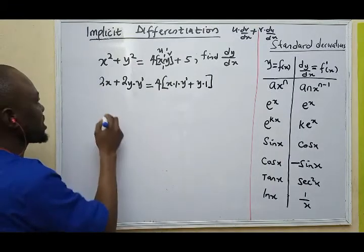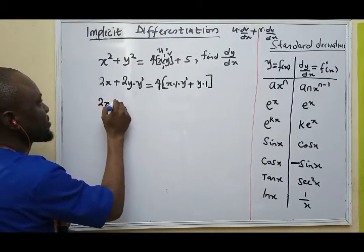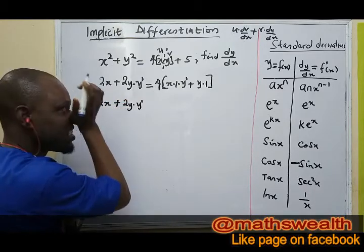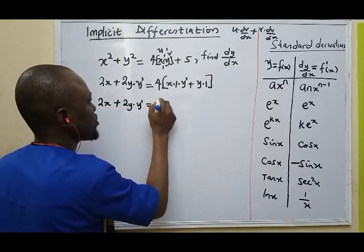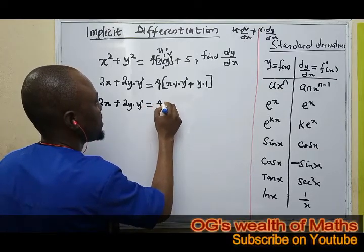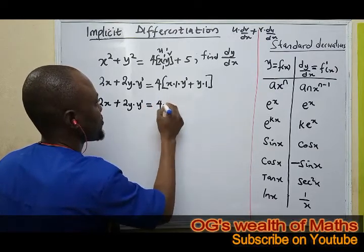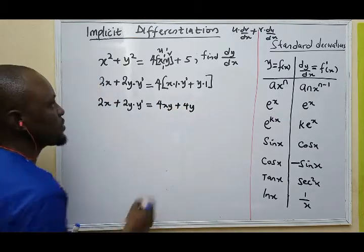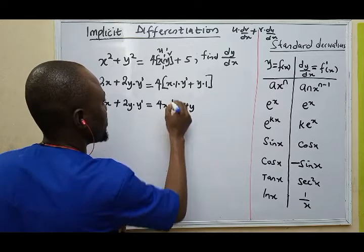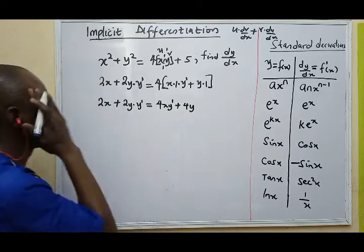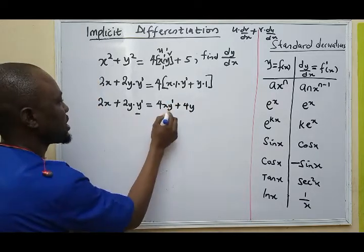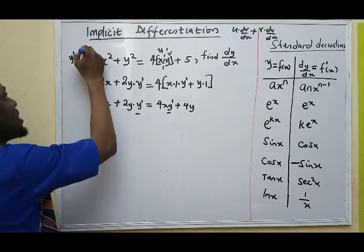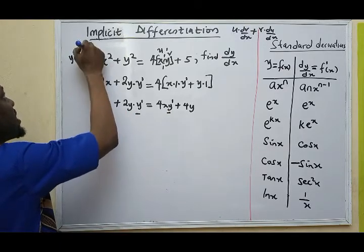Therefore, in this expression, 2x plus 2y dot y prime, which is equal to 4, I'm going to open up the bracket, 4xy prime plus 4y. This y prime is the same thing as dy/dx.